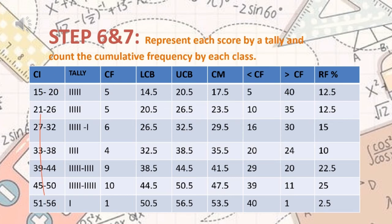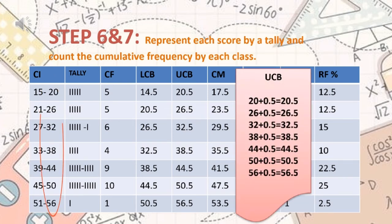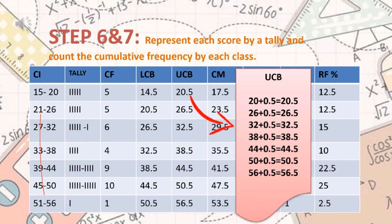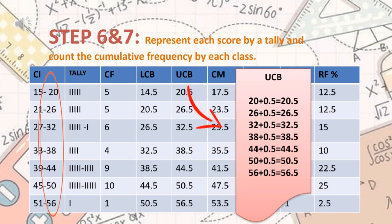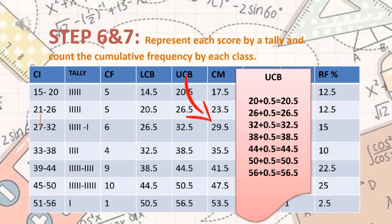The next column is UCB, or upper class boundary. The numbers 20 through 56 come from our class interval results. To get the UCB, we add 0.5 to each upper class limit. For example: 20 plus 0.5 equals 20.5; 26 plus 0.5 equals 26.5; 32 plus 0.5 equals 32.5, and so on. Our upper class boundaries are 20.5, 26.5, 32.5, 38.5, 44.5, 50.5, and 56.5.